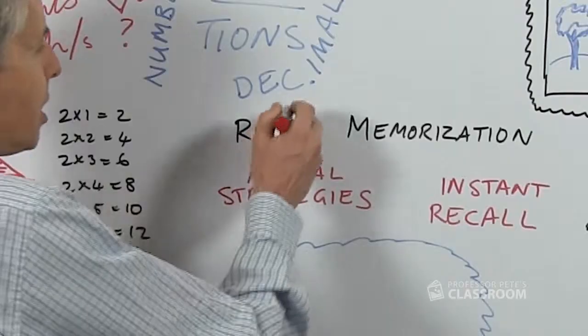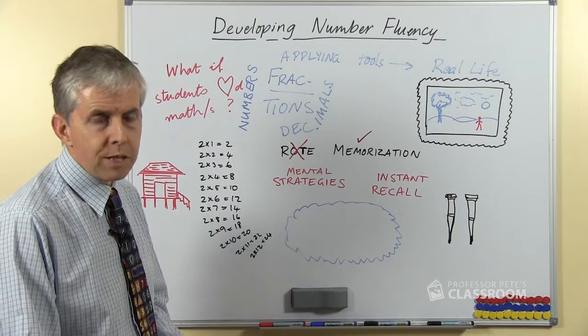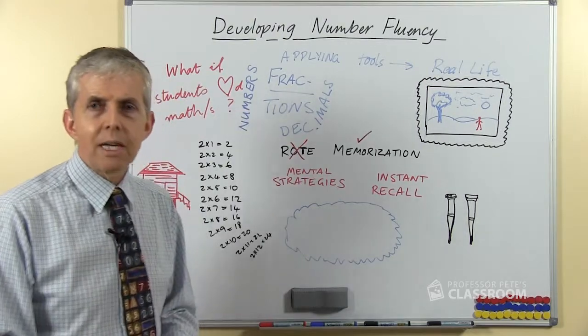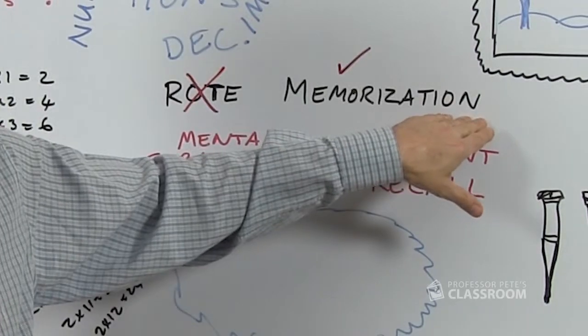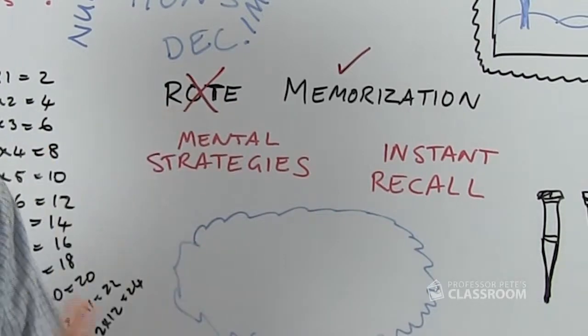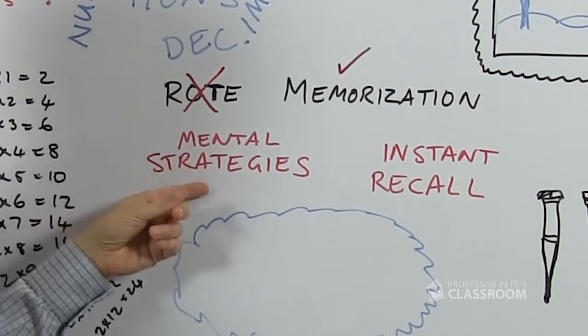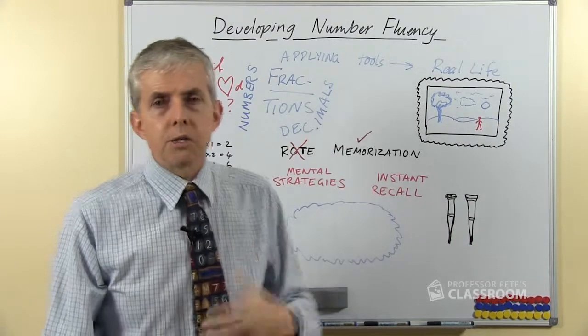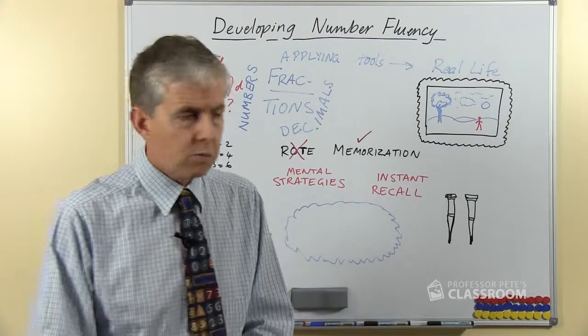So what I want to do is to separate the two words here, rote and memorization, because to use an academic word they tend to be conflated and put together as if they mean the same thing, but they don't. So my view is students should learn to memorize their number facts, they absolutely need instant recall, they need to know what the answers are and know them quickly, but rather than using rote learning they should use mental strategies. So we need to separate those two and not think as soon as we say memorization we're talking about old fashioned rote learning because we're not.